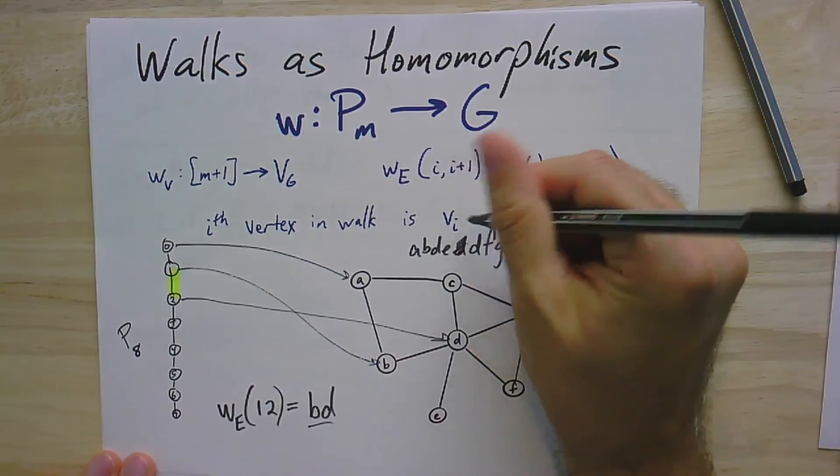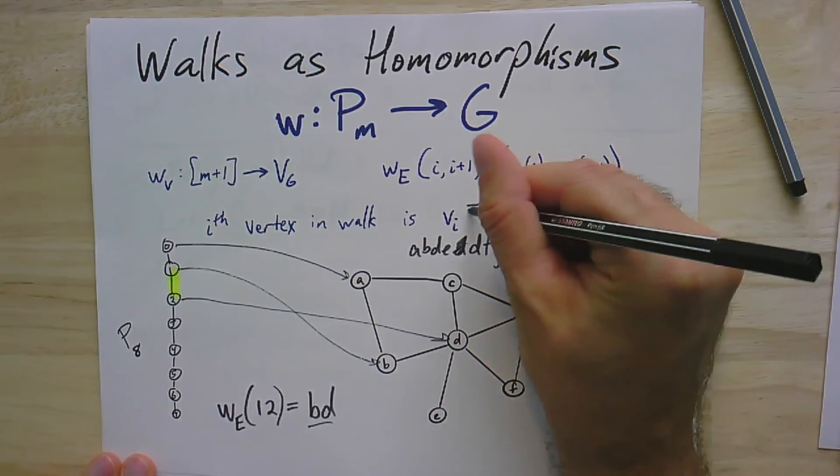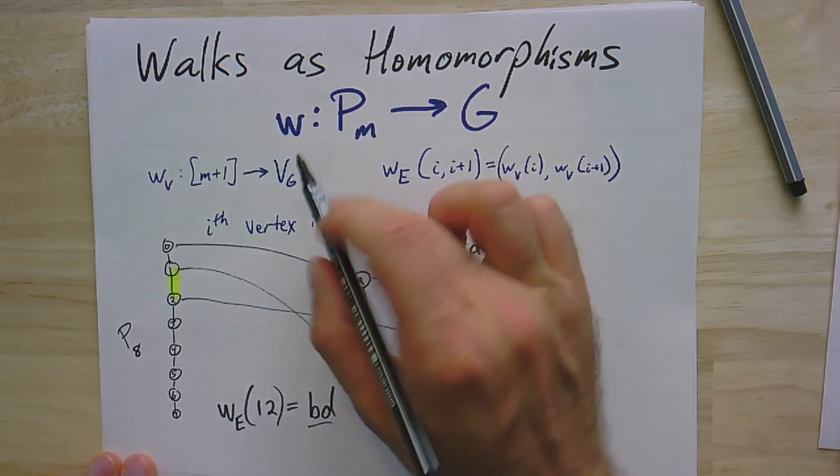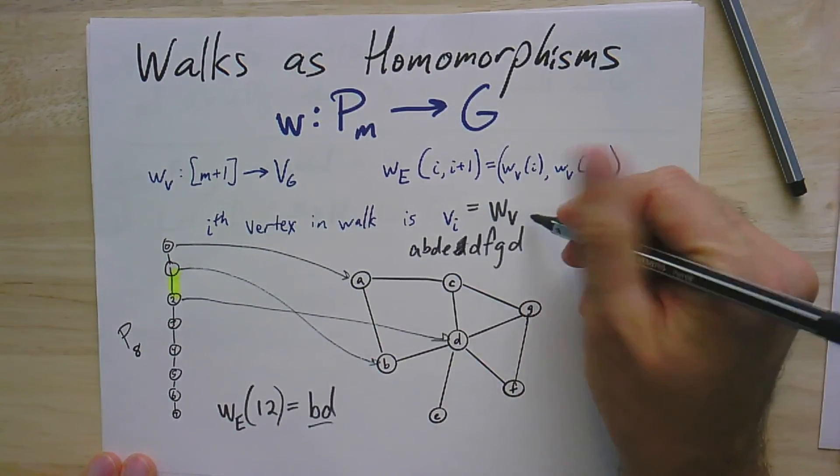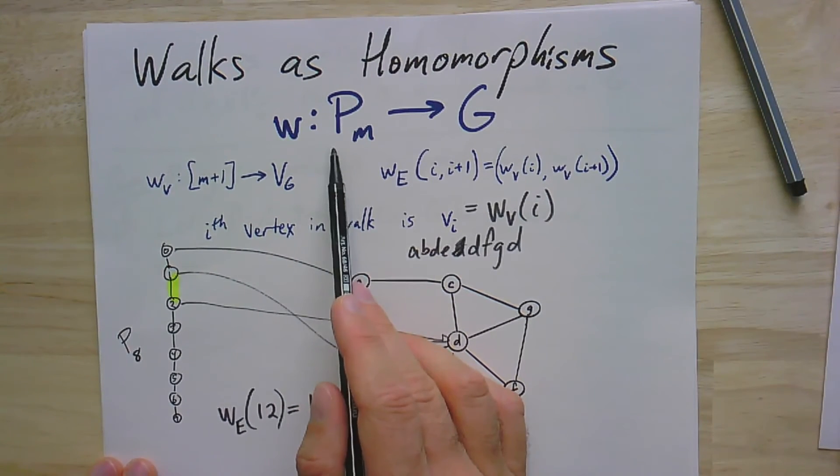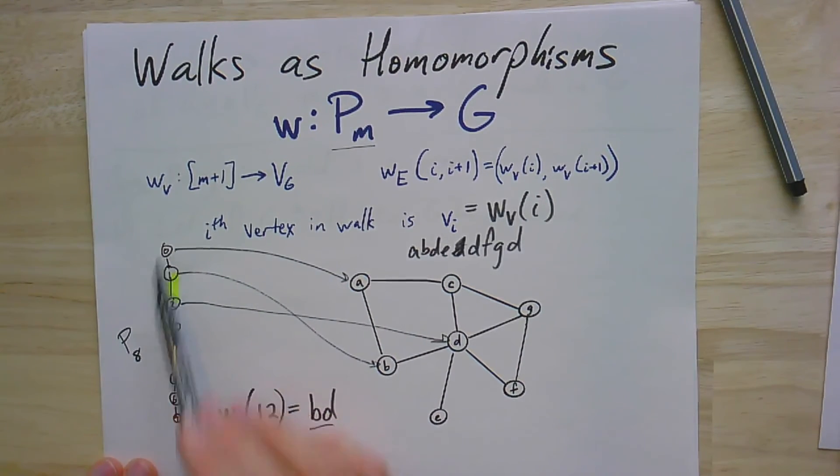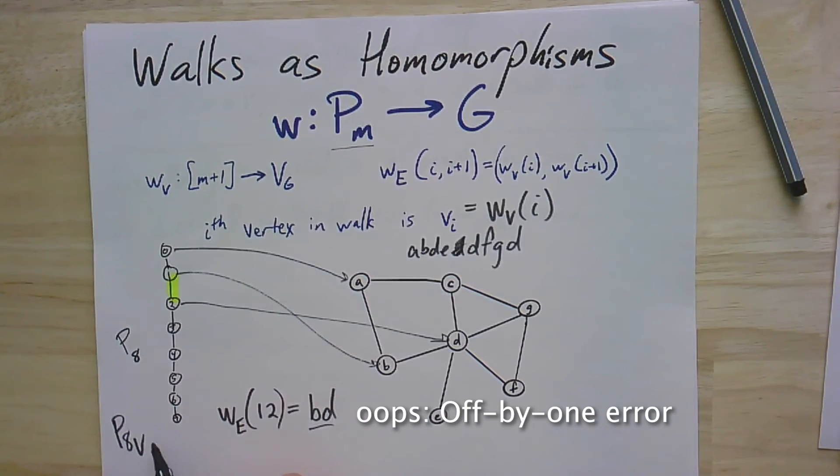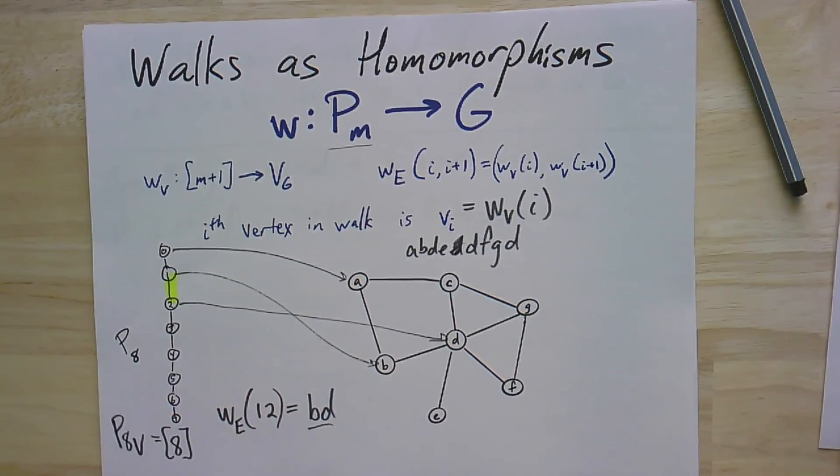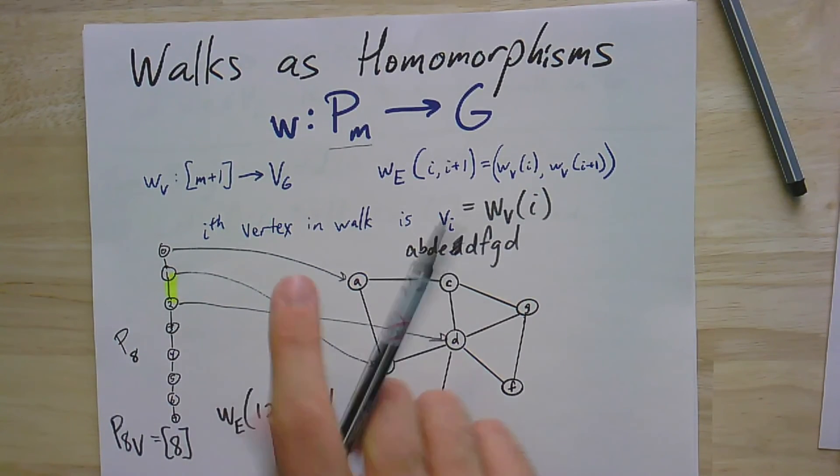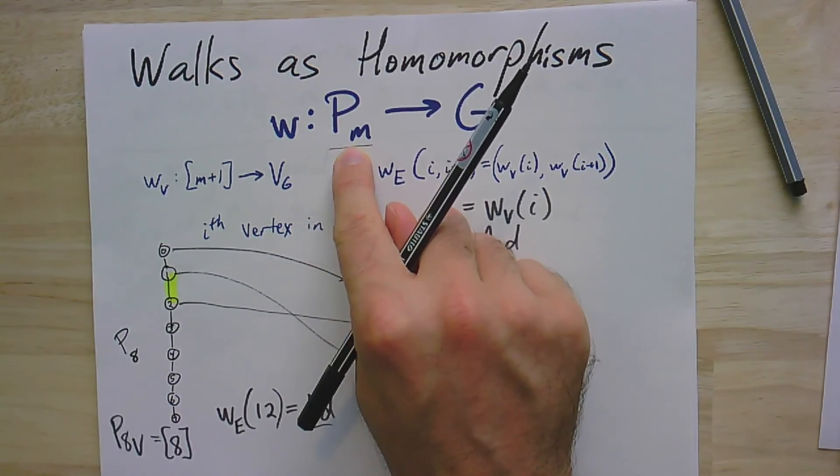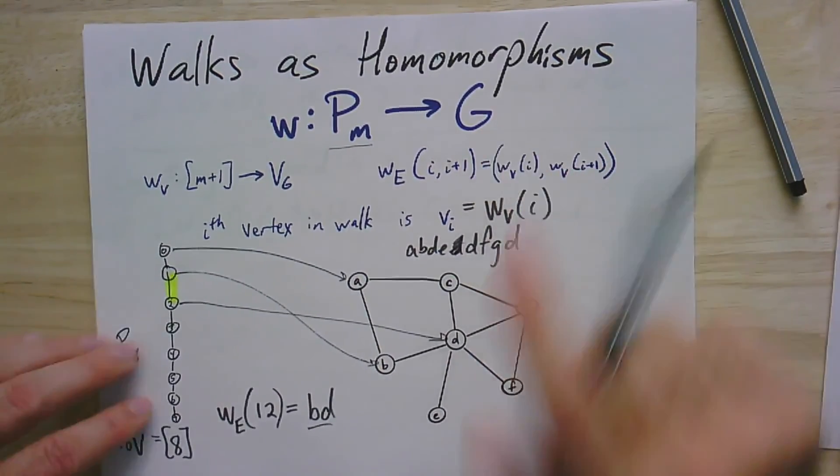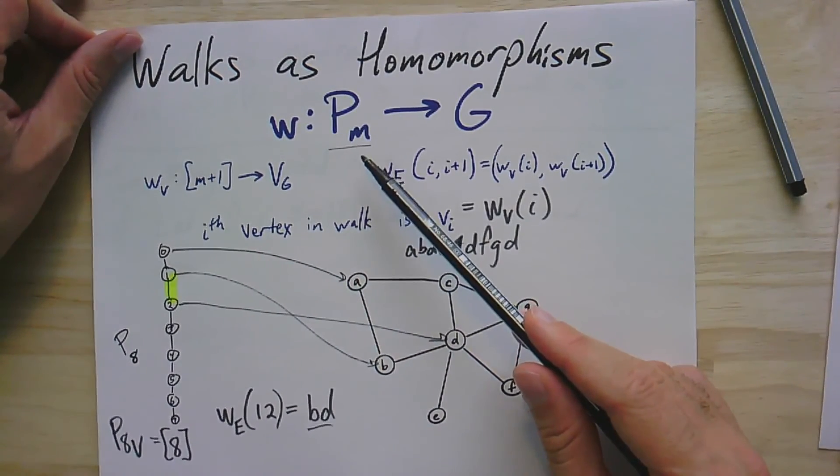So the i-th vertex in the walk, we call it Vi. We're saying that Vi should be defined to be wherever the walk places it. So it's W sub V here, the part of the morphism that maps the vertices of the i-th vertex. This is one of the cases where it's also handy that we defined this canonical path graph to have a vertex set that starts at zero. P8 here, remember the vertex set, I hate having double subscripts, but P8's vertex set is just zero to seven. You can think of the walk as just a sequence of vertices where every pair is an edge, but you can also think of it as a homomorphism from the canonical path into the graph. This is a walk of length M, where M is the number of edges.